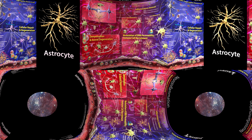Astrocytes are star-shaped glial cells in the brain and spinal cord, accounting for 20–40% of all glial cells. They help in the formation and maintenance of the blood-brain barrier (BBB), provide nutrient support for neurons, remove excess toxins such as glutamate, and maintain extracellular ion balance. At the BBB, astrocyte processes contact blood vessels and encircle endothelial cells by forming perivascular end feet.